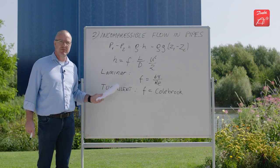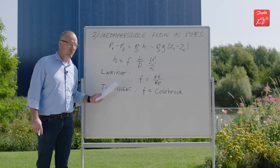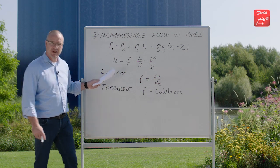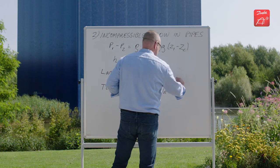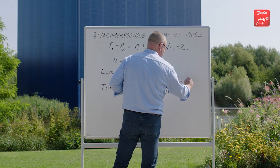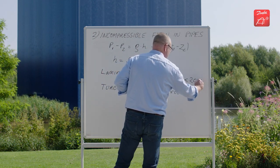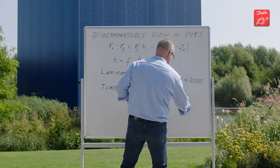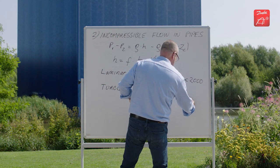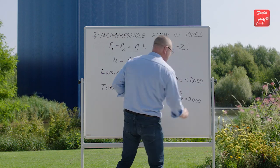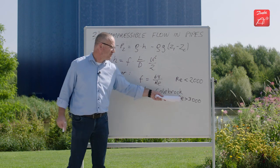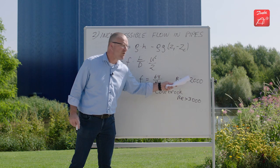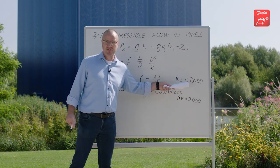In CoolSelector you actually have the possibility to decide yourself when it switches from laminar to turbulent. But the limits we have put in as default is that it is laminar when the Reynolds number is lower than 2,000. And it is turbulent if you have Reynolds number larger than 3,000. So, in between here you will actually have an unknown area.